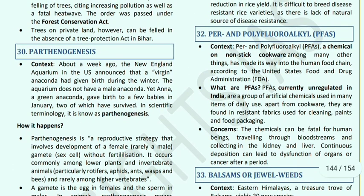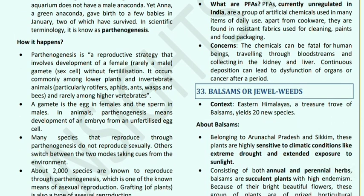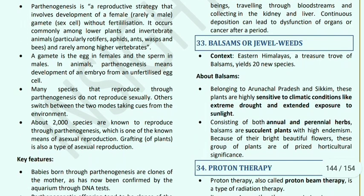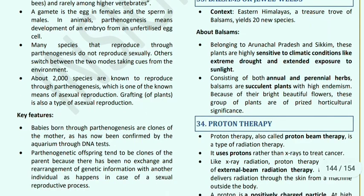PFAS (Per- and Polyfluoroalkyl Substances): these are chemicals used in non-stick cookware and items of daily use. PFASs are currently unregulated in India. They are a group of artificial chemicals used mainly in daily use items like cookware. Balsams (Impatiens): eastern Himalayas is a treasure trove of balsams, yielding 20 new species belonging to Arunachal Pradesh and Sikkim. These plants are highly sensitive to climatic conditions like extreme drought and extended sunlight. They include annual and perennial herbs, and are succulent plants with high endemism.